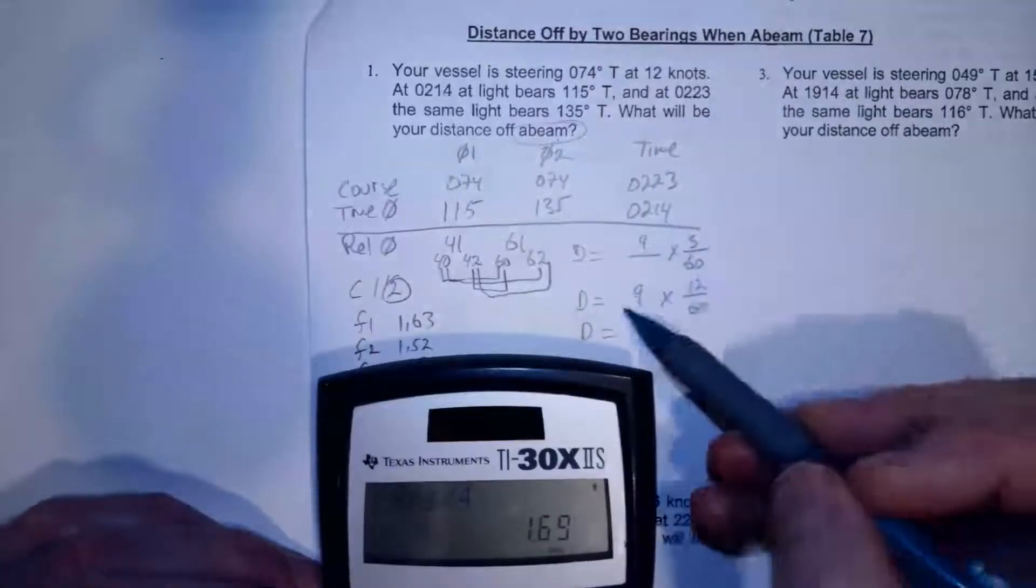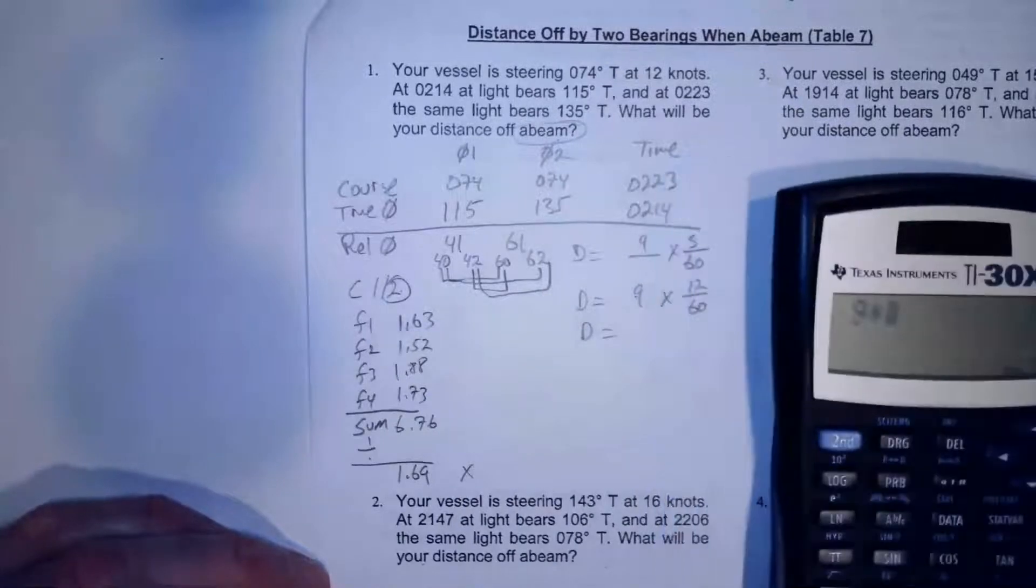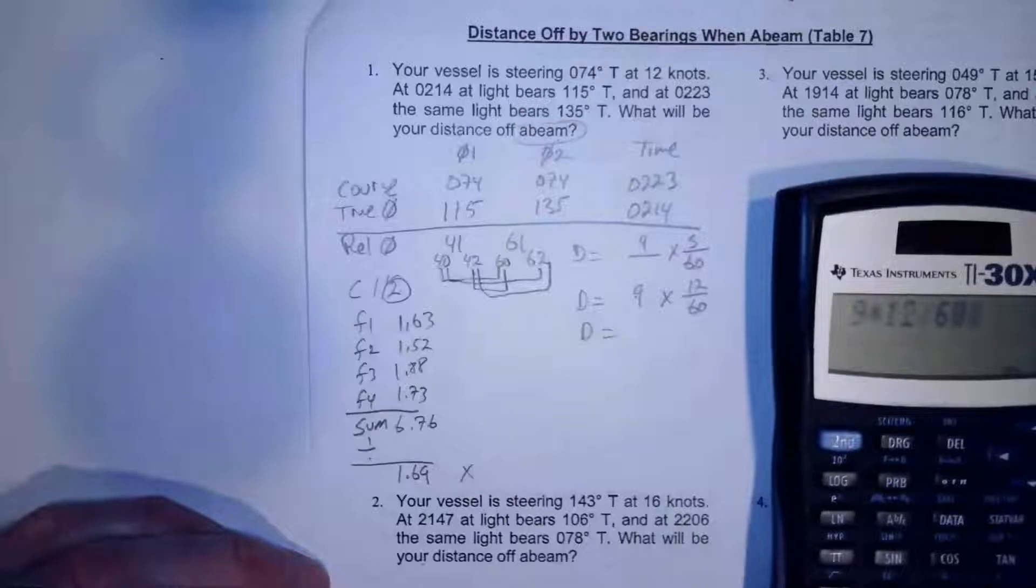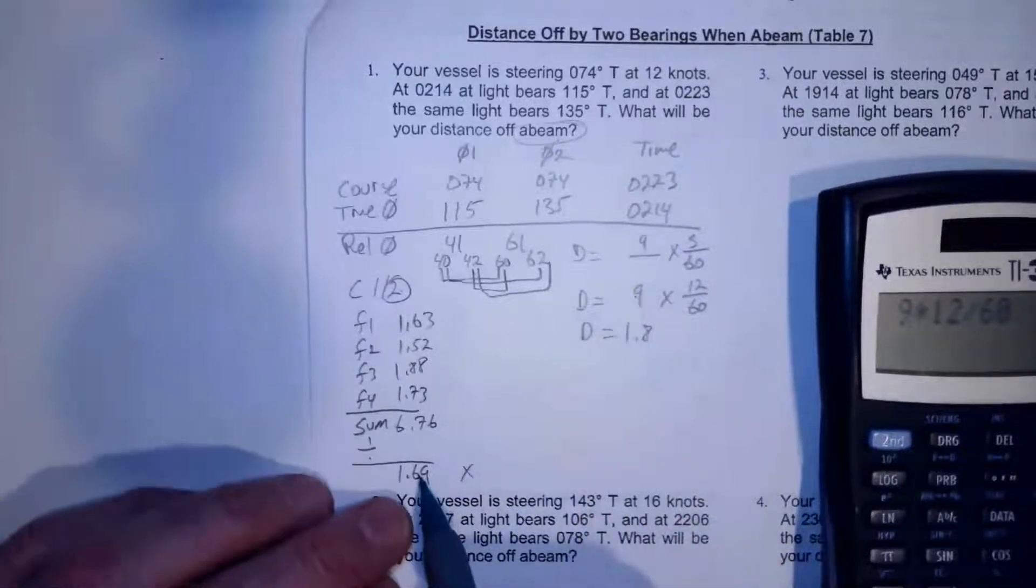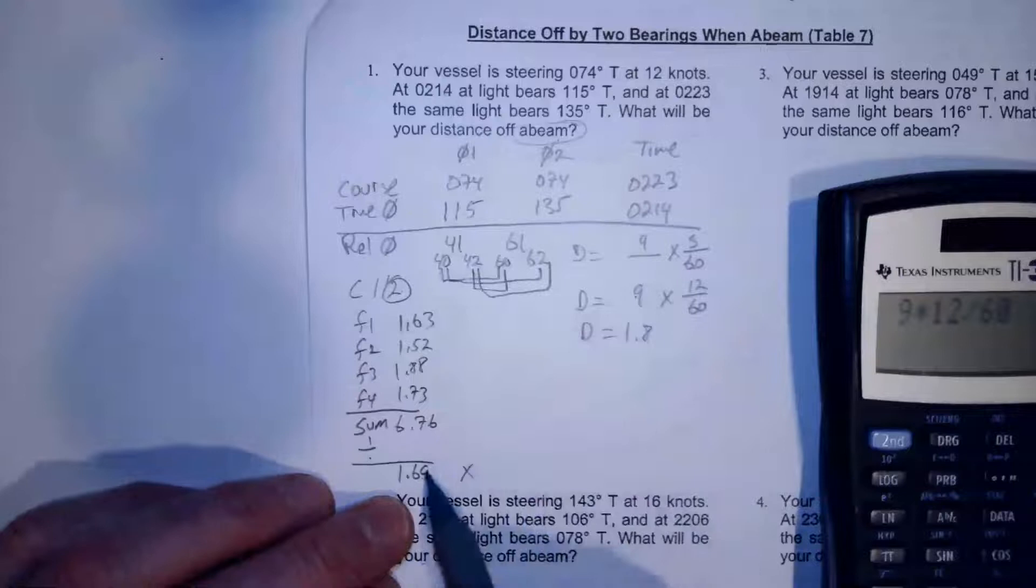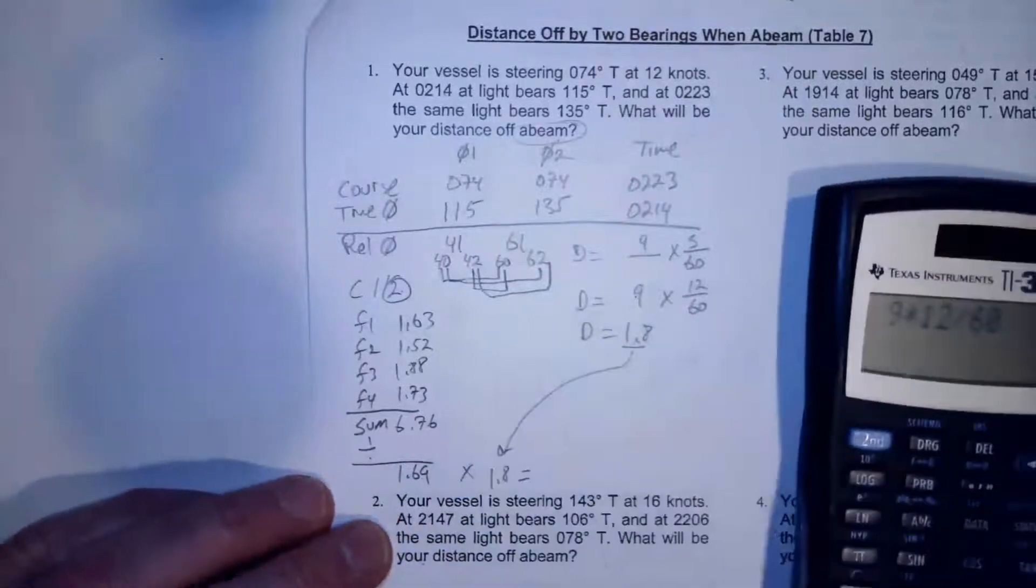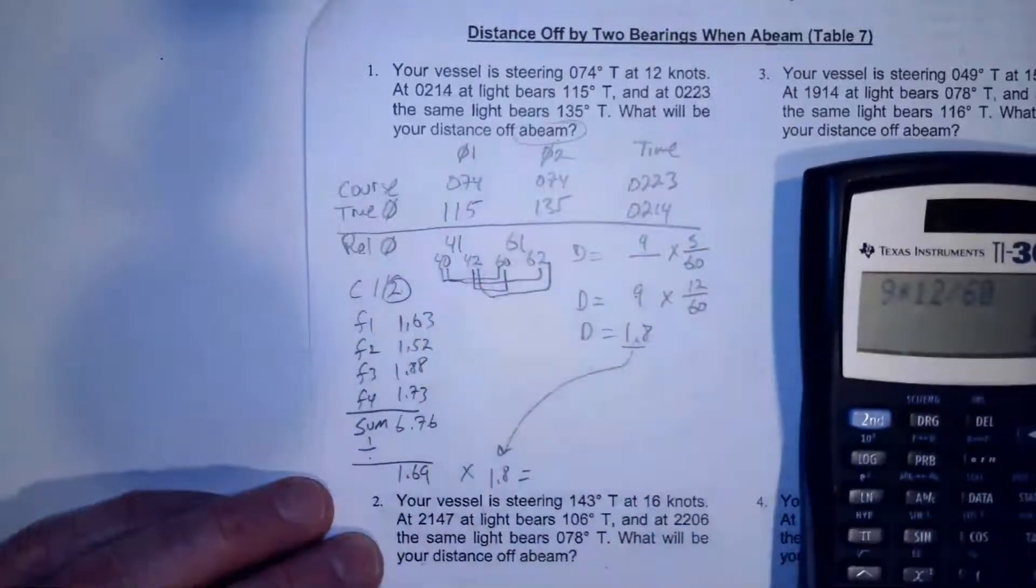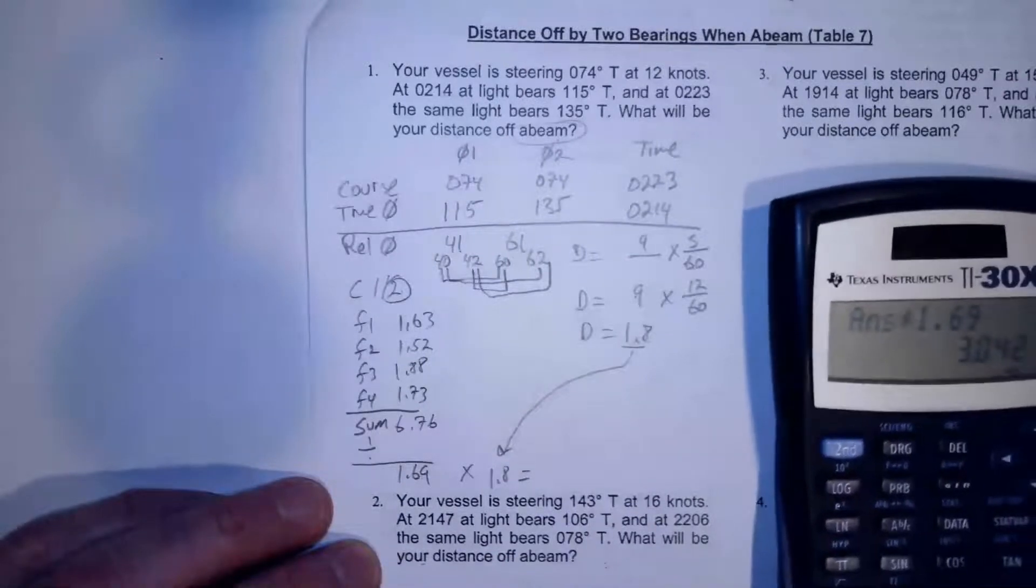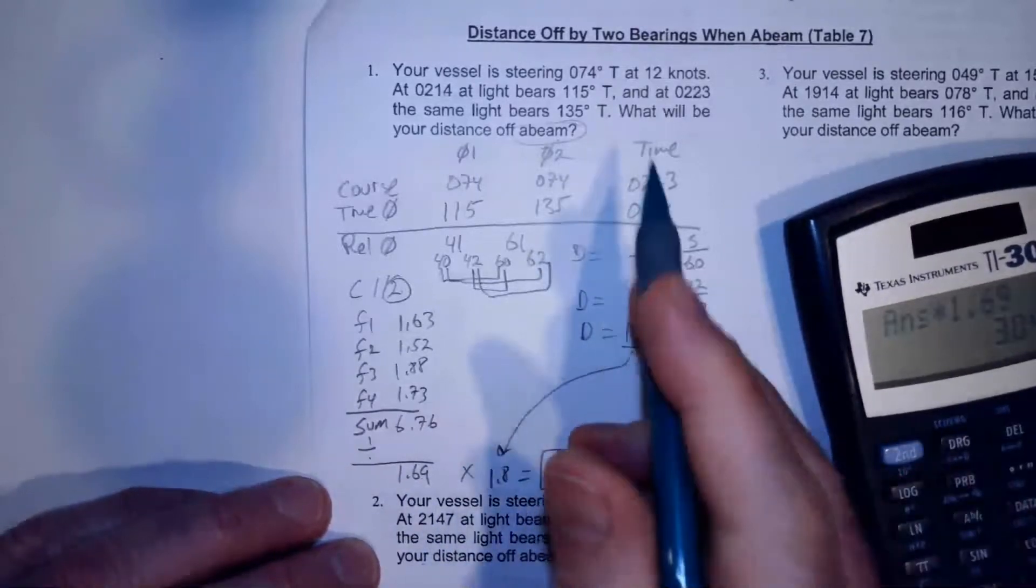Now my distance is going to be 9 minutes times 12 knots divided by 60. So I'm going to go 9 times 12 divided by 60. And that gives me 1.8 miles. So I went 1.8 miles and my leg when I'm off abeam is going to be 1.69 times 1.8. So this drops down here, 1.8 and my distance. My distance off at time of second bearing or my distance off when abeam is going to be 1.8 times 1.69. And that gives me 3.0. So 3.0 nautical miles is how far I'll be off when I'm abeam.